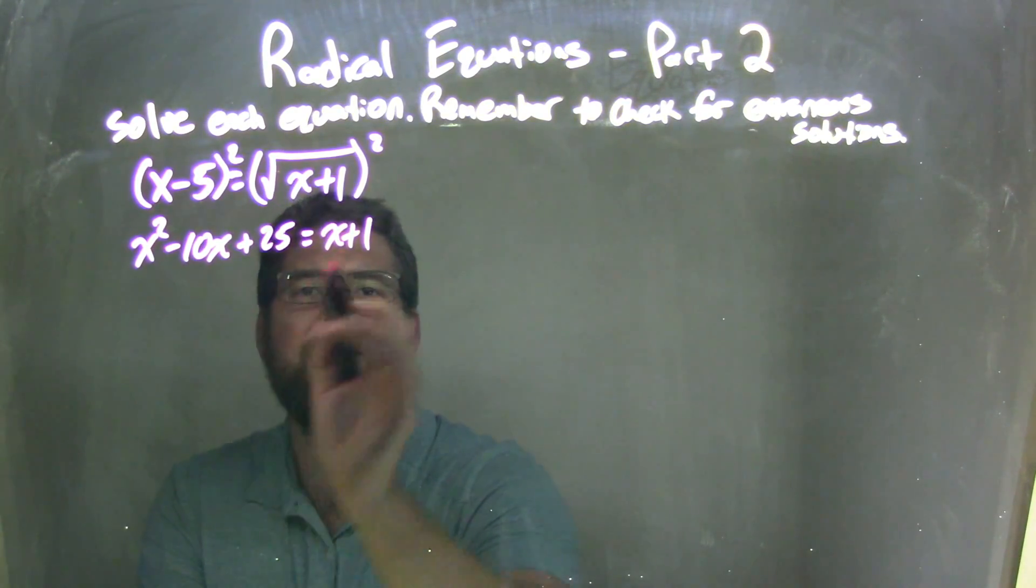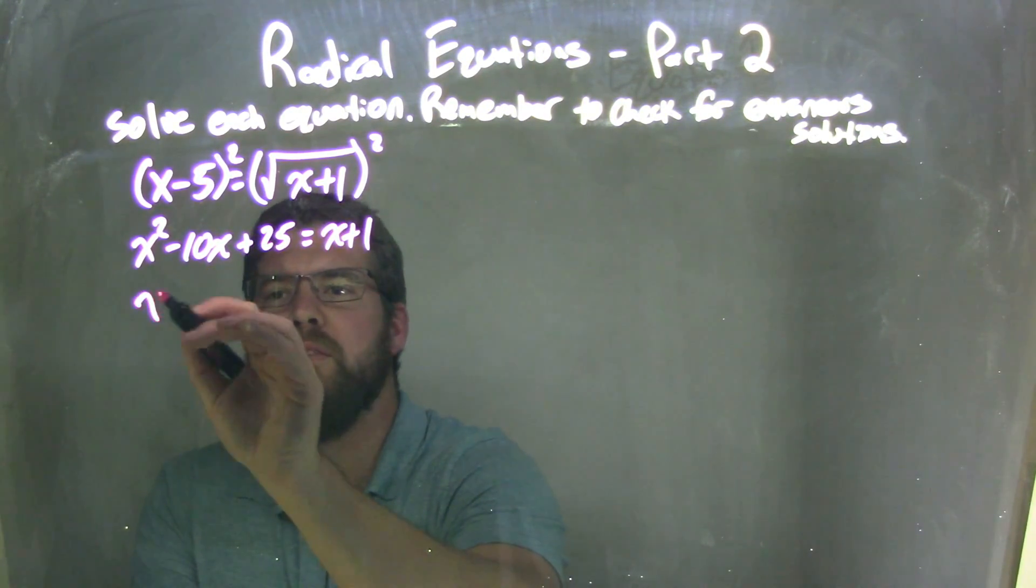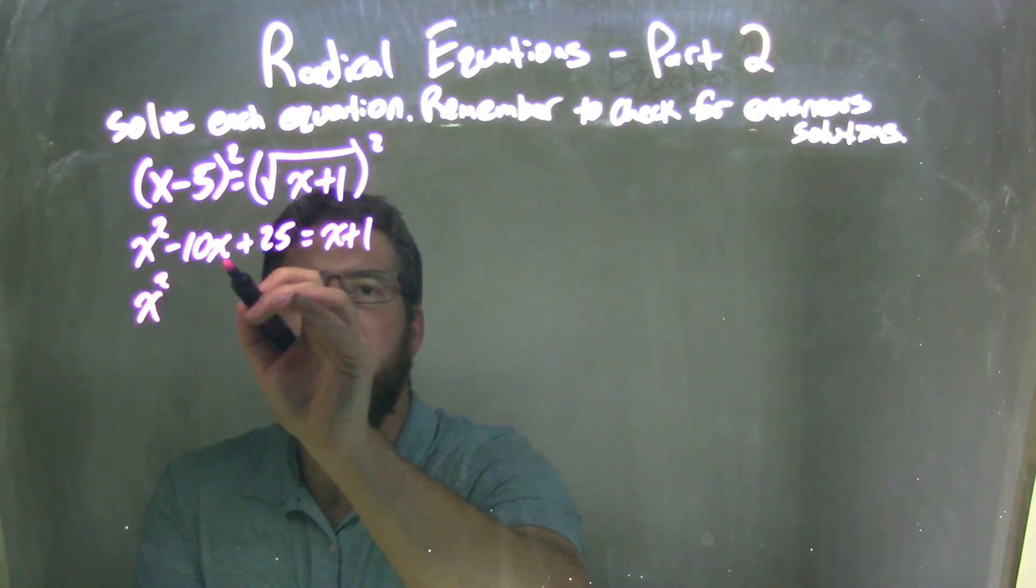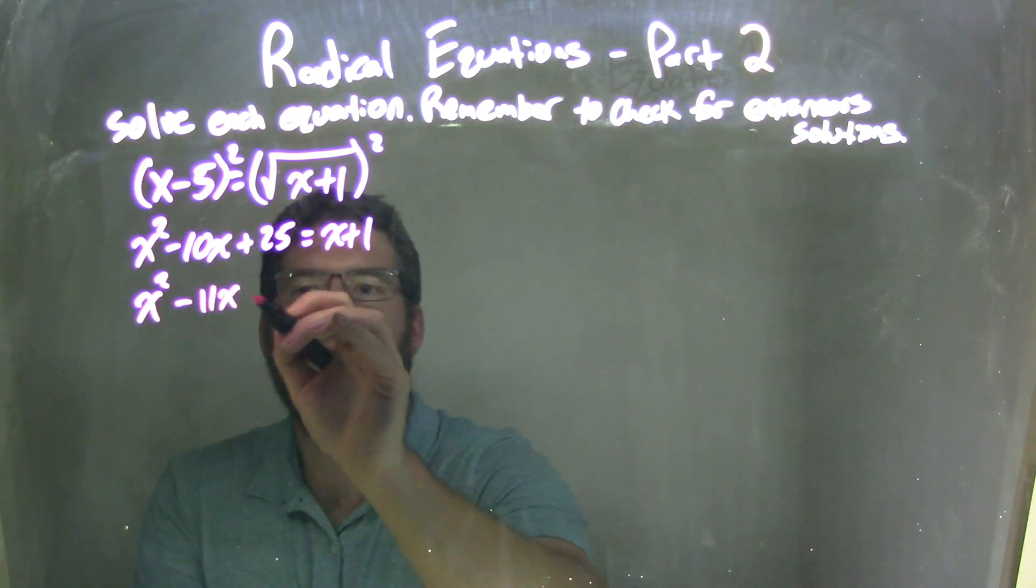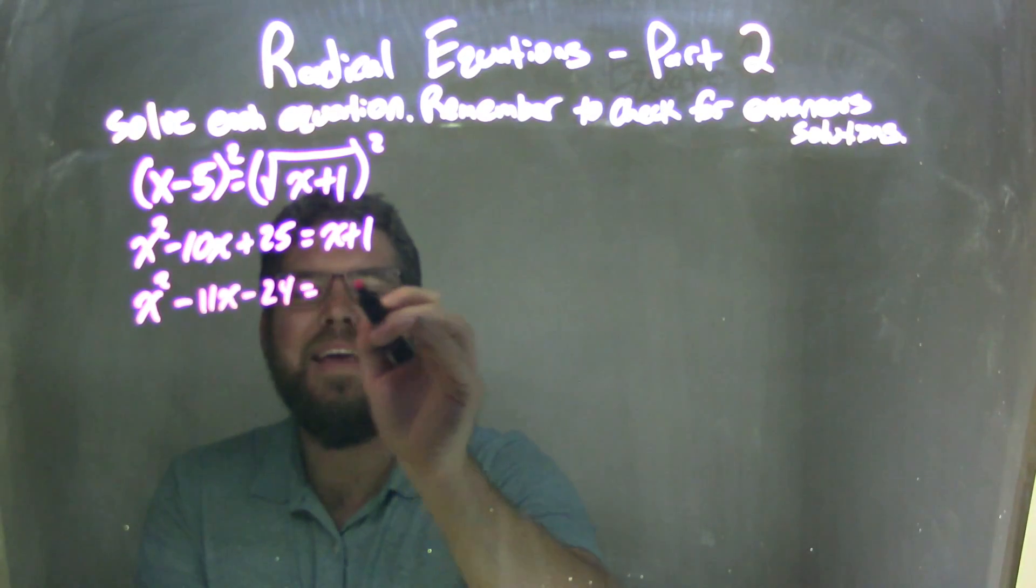Let's bring everything over to the left-hand side, subtract an x from both parts. So, negative 10x minus x is negative 11x, and then subtract the 1, so 25 minus 1 is 24 equals 0.